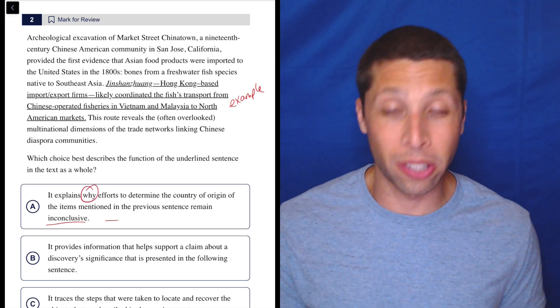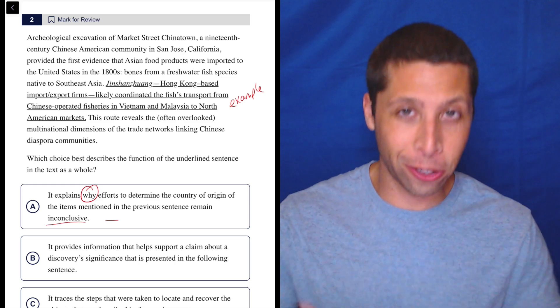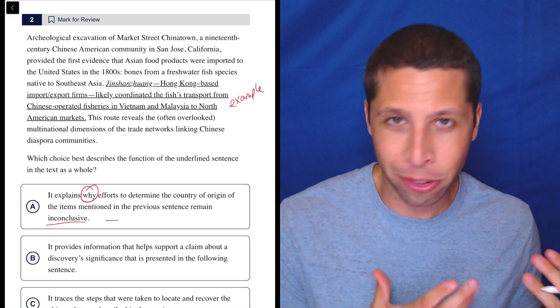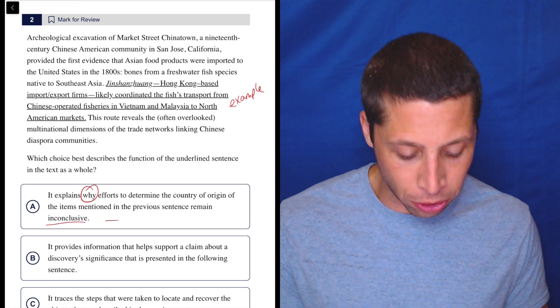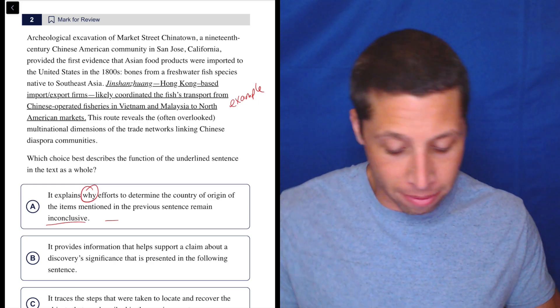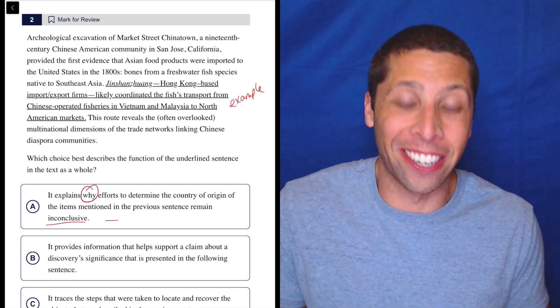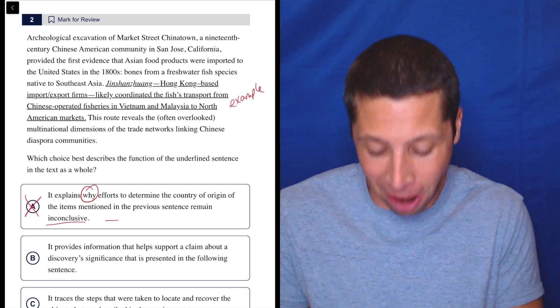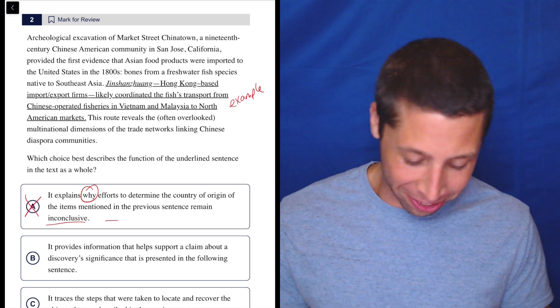Another thing we can do to help with these choices is, especially when they include a word like why, turn the choice into a question. And if you can't answer the question, that's not a good sign. So why were efforts to determine the country of origin inconclusive? I don't know. I guess, see, I don't even know how to answer that. There's nothing here. So that's a good sign that it's wrong. Don't try to force it. If there's no evidence that it's right, it's wrong.